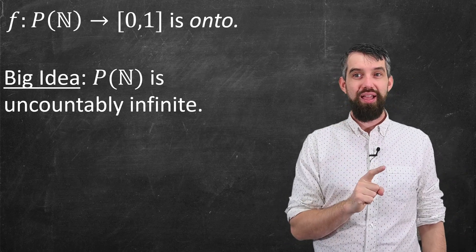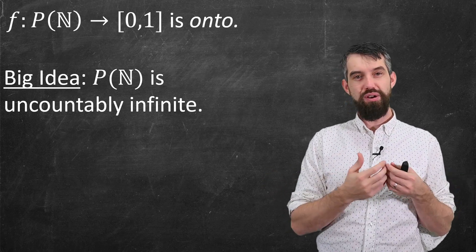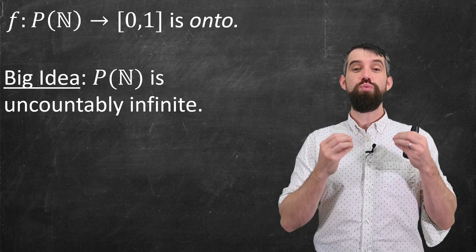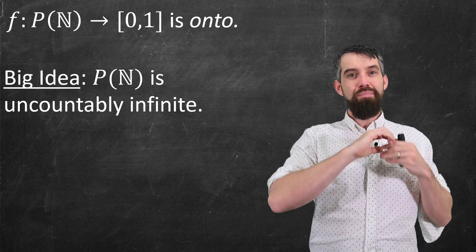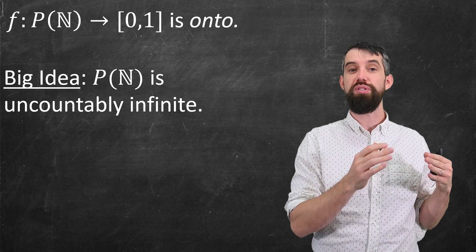But here's the amazing thing. The interval [0, 1] clearly has infinitely many points in it. The interval zero to one has certainly infinitely many points in it, but it actually has what we call uncountably infinitely many points inside of it.